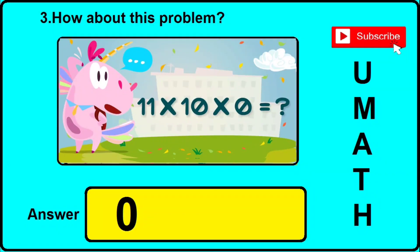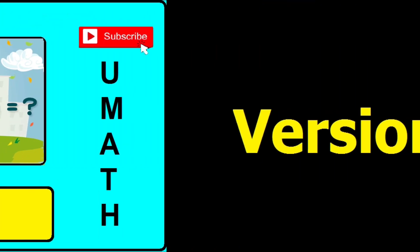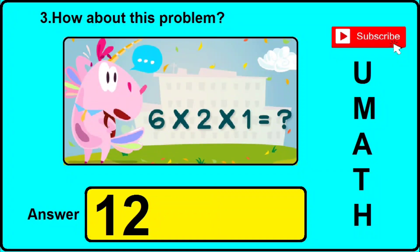In version 2 of the same question, it is given: 11 into 10 into 0 equals what. The correct answer will be 0, so click 0 if you find this sort of image in question number 3. In version 3, it is given: 6 multiply 2 multiply 1 equals what. The correct answer will be 12, so click 12 if you find this sort of image in question number 3.